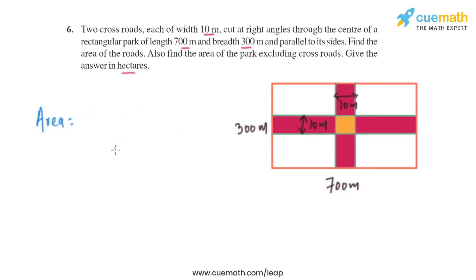Now in the next part, we have to find the area of the park excluding the crossroads. We can find the area of the park: 300 × 700. The area of a rectangle is length times breadth. We subtract the area of the crossroads from this: 300 × 700 - 9,900.